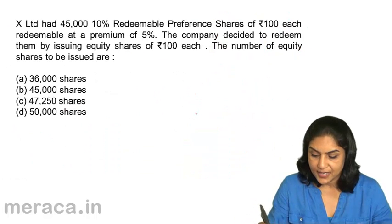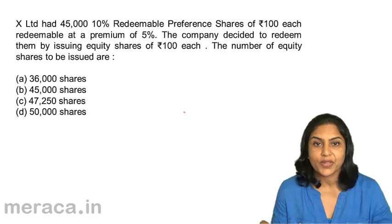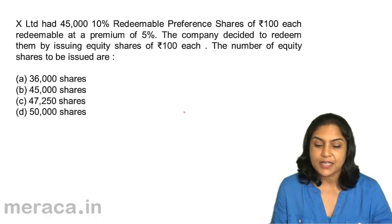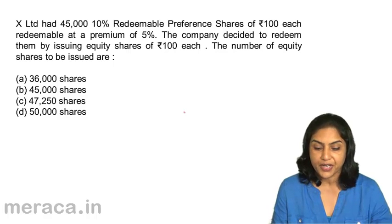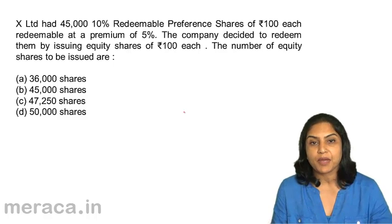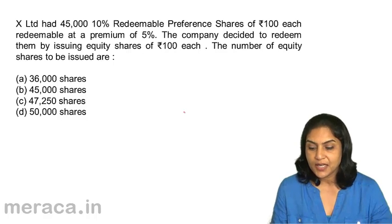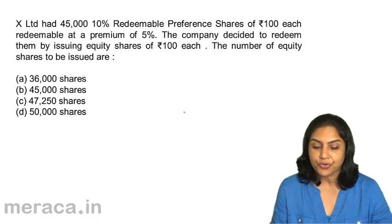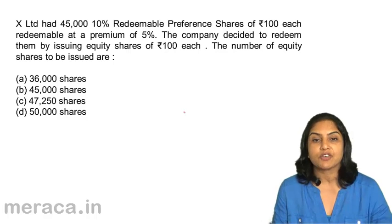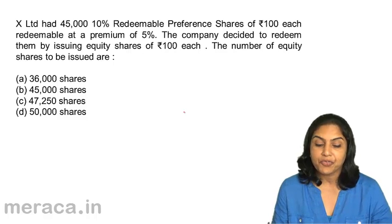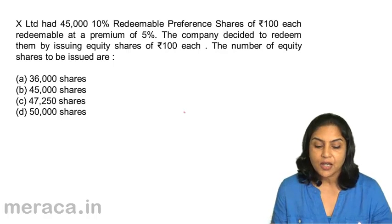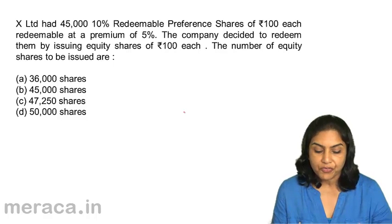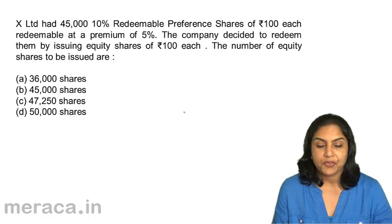Let us test our understanding with an example. X Limited had 45,000 10% redeemable preference shares of Rs. 100 each, redeemable at a premium of 5%. The company decided to redeem them by issuing equity shares of Rs. 100 each. The number of equity shares to be issued are: A) 36,000 shares, B) 45,000 shares, C) 47,250 shares, or D) 50,000 shares.